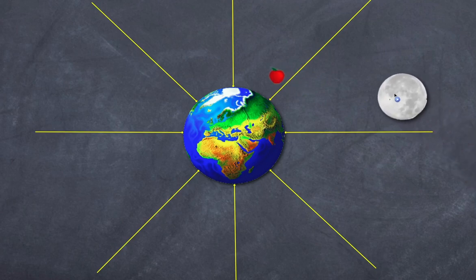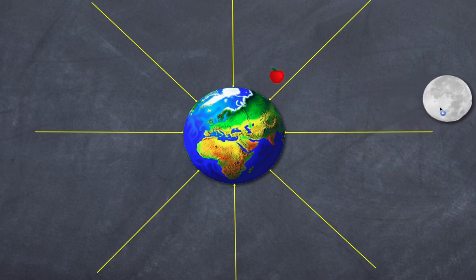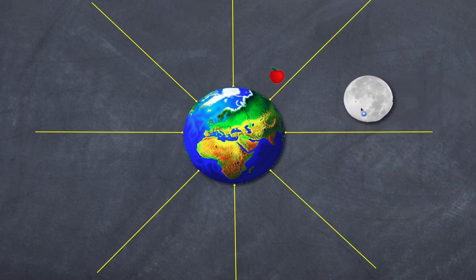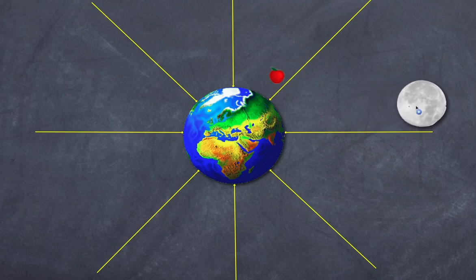It's the same with the moon. The moon is also in the earth's gravitational field, and if the moon was further away the force of attraction will be weaker — gravity will be weaker — and if the moon was closer the gravity will be stronger. It's the same concept that gravity exerts forces on both the apple and the moon.